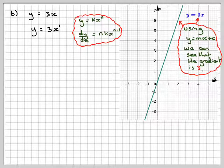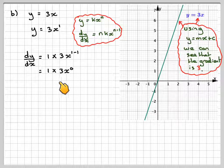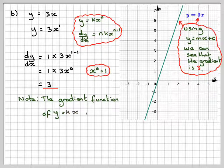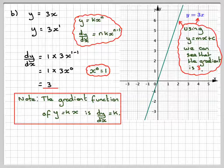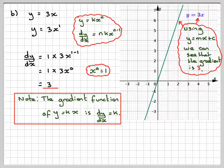We've got y is equal to kx to the n, so dy/dx is n·kx to the n minus 1. Therefore dy/dx: bring the power down in front, giving 1 times 3x, then reduce the power by 1, giving 1 times 3x to the 0. Since x to the 0 is 1, we get the answer 3 — which is exactly the gradient of this line. So the gradient function of a line y is equal to kx will be dy/dx equal to k. If it were y equals 2x the gradient is 2; if y equals minus 2x the gradient is minus 2. We don't really need to go through this procedure to find the gradient function of a linear equation.